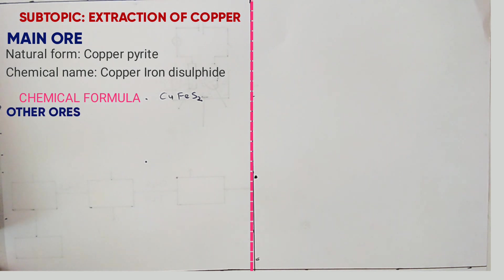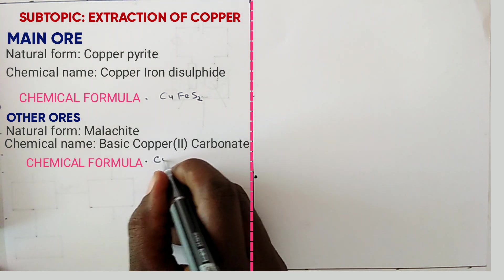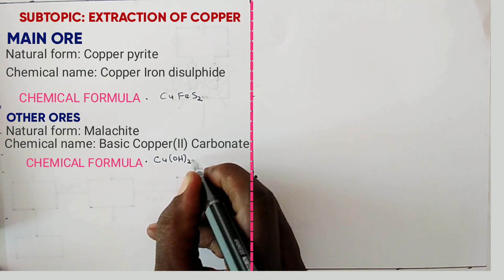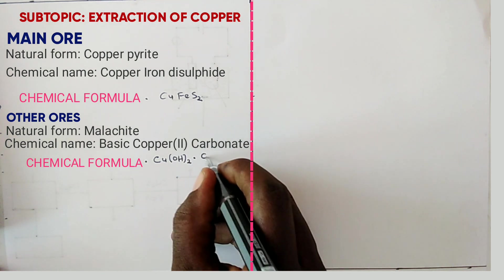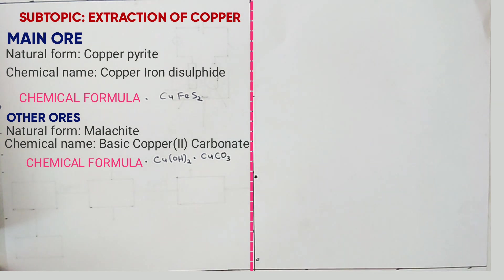Now the other ores — we have malachite, whose chemical name is basic copper carbonate with the formula CuOH2·CuCO3. The other ore is called copper glance, whose chemical name is copper one sulfide.